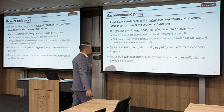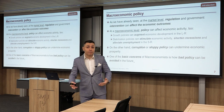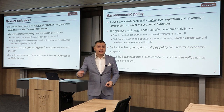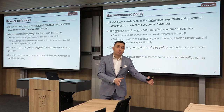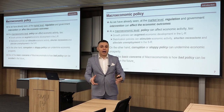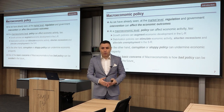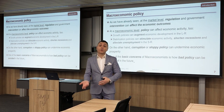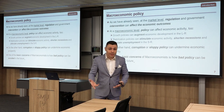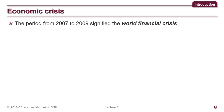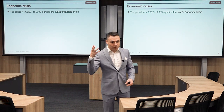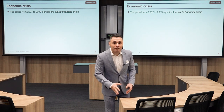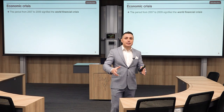One basic concern in macroeconomics is learning from bad policy to avoid repeating it. When we had the crisis in 2007, it was a very deep crisis that passed relatively quickly for the United States because policymakers like Ben Bernanke had learned very well the lessons from the Great Depression of 1929. The period from 2007 to 2009 signified the world financial crisis, and the macroeconomics taught before 2007 is vastly different from after.